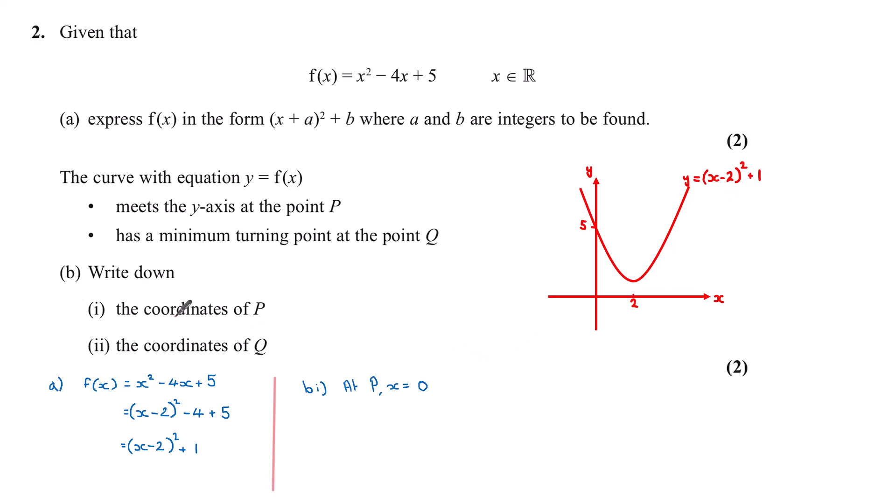And so, if we weren't using a diagram, writing the coordinates of P. P is the point where it meets the y-axis, so that is when x is equal to 0. I can substitute x equals 0 into the equation I have found. This gives me minus 2 all squared, which is 4, plus 1, which is of course 5. This gives me the coordinate of P as 0, 5.